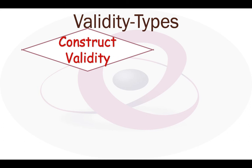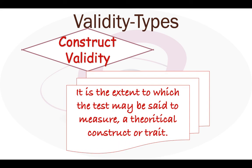Next is construct validity. A construct is an individual characteristic that we assume exists in order to explain some aspects of behavior. Whenever we wish to interpret assessment results in terms of individual characteristics like reasoning or problem-solving, we are concerned with a construct. The construct validity of a test is the extent to which the test may be used to measure a theoretical construct or trait.